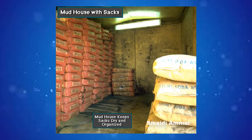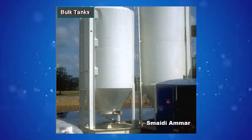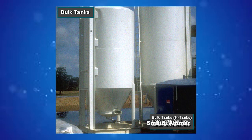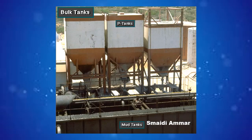The mud house or sack room keeps the sacks dry and allows them to be stored with care. Silo-like tanks called bulk tanks or P tanks hold mud additives like barite and bentonite. Crew members use some additives in such large quantities that suppliers load them into the bulk tanks to save time and money. Bulk tanks usually have their own hopper or pneumatic system for transferring the additives to the mud system.